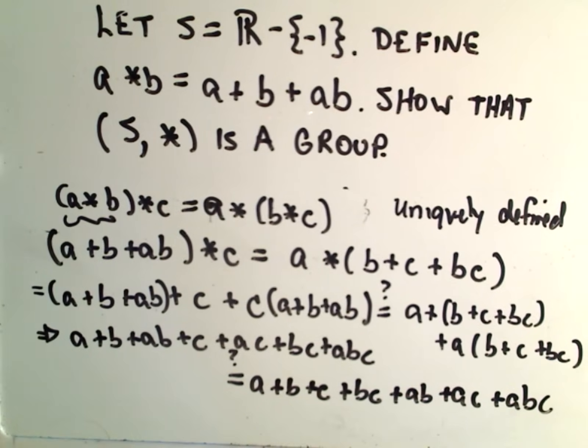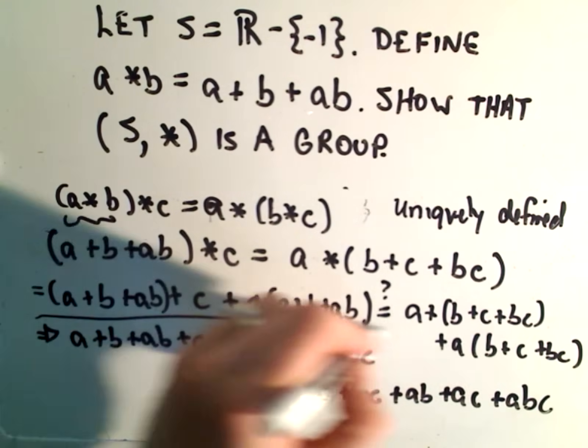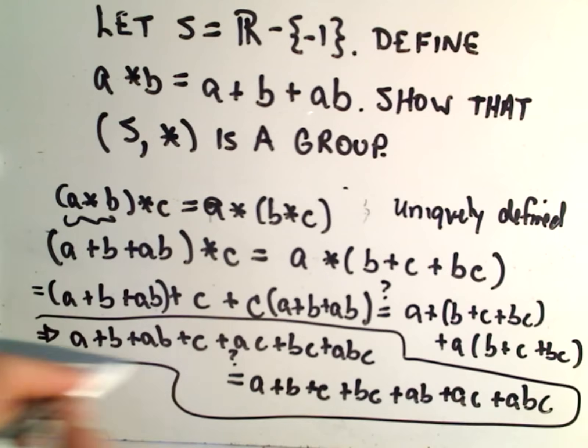we'll get A plus B plus C plus BC plus AB plus AC plus ABC. So the question is, are these two things equal? Sorry, I ran out of room. This problem got long.